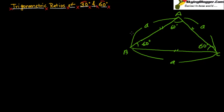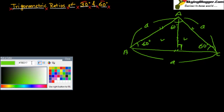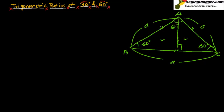Now I'm going to draw a perpendicular line here — this is the perpendicular. In both triangles formed, you can see this side equals this side, both angles are 60 degrees, and both have a right angle of 90 degrees. So by RHS congruence — right angle, hypotenuse, side — both triangles are equal.